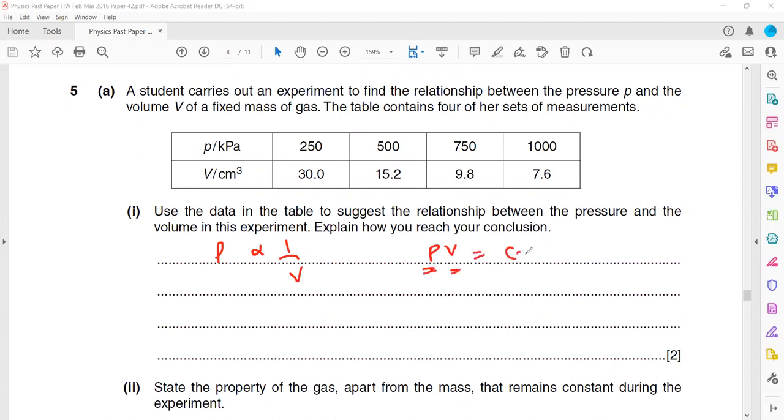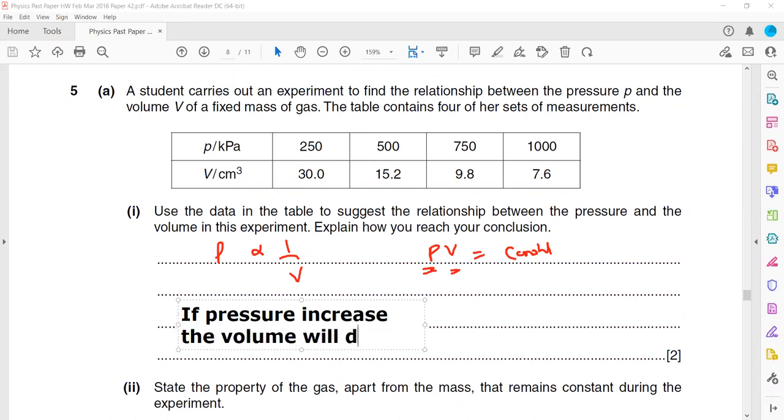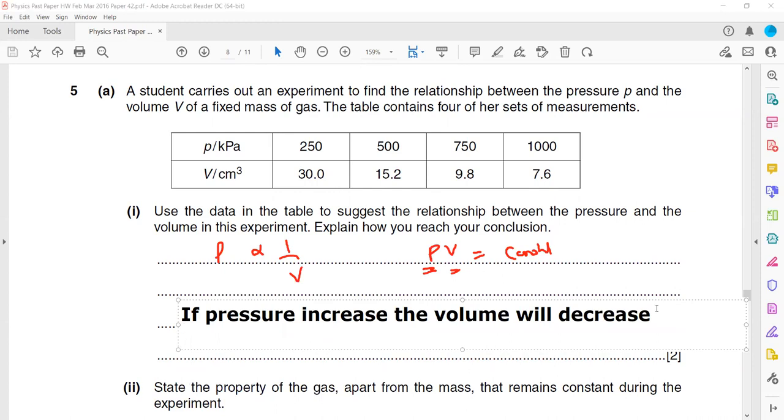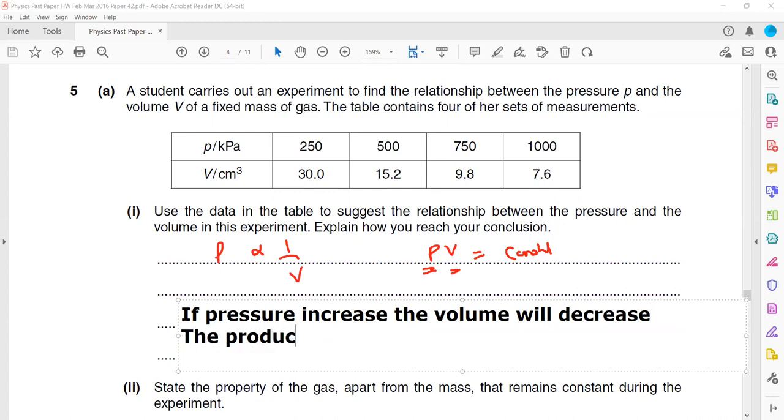When we say pressure is inversely proportional to volume, whenever any value of the pressure multiplied with this volume will get a constant answer, a fixed answer. So how we explain this result? If pressure increases, the volume will decrease. And whenever two quantities are inversely proportional, the product will be constant. So the product of pressure and volume will be constant.